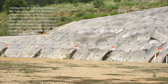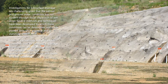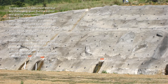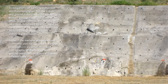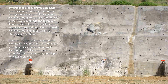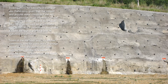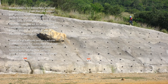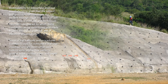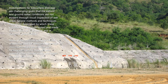Investigations for subsurface drainage are challenging given that the subsoil and groundwater conditions are not evident through visual inspection of wet areas. Several methods and techniques have been developed by which these conditions can be determined and made evident through graphical and statistical presentation. Some of the methods commonly used for subsurface drainage investigations include observation well hydrographs, profile flow patterns, groundwater contour maps, and depth-to-water-table maps.